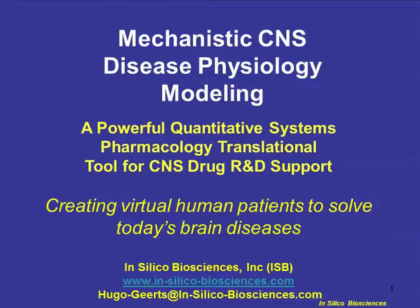Today our speaker is Dr. Hugo Geerts. He is currently Chief Science Officer at In Silico Biosciences, a company providing pioneering mechanistic disease modeling services in neuroscience R&D to pharma companies with programs in neurology and psychiatry. Dr. Hugo Geerts holds a bachelor's degree in theoretical physics, a bachelor's degree in medicine, a PhD in biophysics, and a master's in pharmaceutical sciences. He has almost 20 years of experience in drug discovery and development as a research fellow at the Janssen Research Foundation, where he headed the Alzheimer's Discovery Research Group. He is on the faculty of the Perelman School of Medicine at the University of Pennsylvania, as well as the Department of Pharmacology at Drexel University.